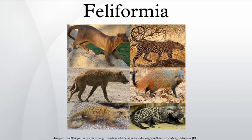All extant feliforms share a common attribute: their auditory bullae. This is a key diagnostic in classifying species as feliform vs. caniform. In feliforms the auditory bullae are double-chambered, composed of two bones joined by a septum. Caniforms have single-chambered or partially-divided auditory bullae, composed of a single bone. This feature, however, is problematic for the classification of the extinct Nimravidae as feliforms. Nimravid fossils show ossified bullae with no septum, or no trace at all of the entire bulla.